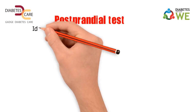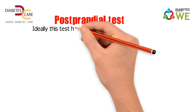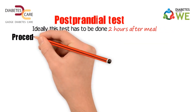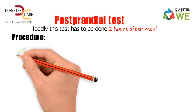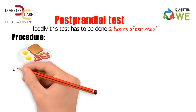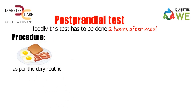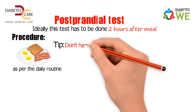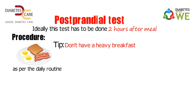The second type is the postprandial test. Ideally, this test is to be done 2 hours after a meal. Procedure: Eat your breakfast as per the daily routine. Tip: Don't have a heavy breakfast just because you are going for the test.